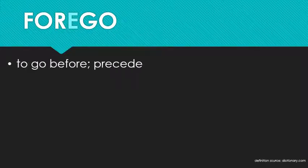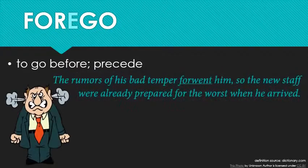Sometimes you'll see 'forego' spelled as 'forego' with an 'e' — that naughty little 'e.' This is a bit controversial amongst experts. People do use it, and most of the time it's just used as an alternative spelling for the 'forego' I've already discussed. But technically, 'forego' with an 'e' means 'to go before' or 'to proceed.' For example: 'The rumors of his bad temper forewent him, so the new staff were already prepared for the worst when he arrived.'